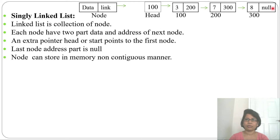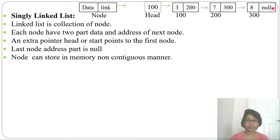In memory, a linked list is stored in non-contiguous manner. One node might be at 100, another at 400, next at 300 — it can be in any location where space is available. You just need to store the address of the next node. Arrays are contiguous, but linked lists are stored in non-contiguous manner; the address just needs to be in the previous node.